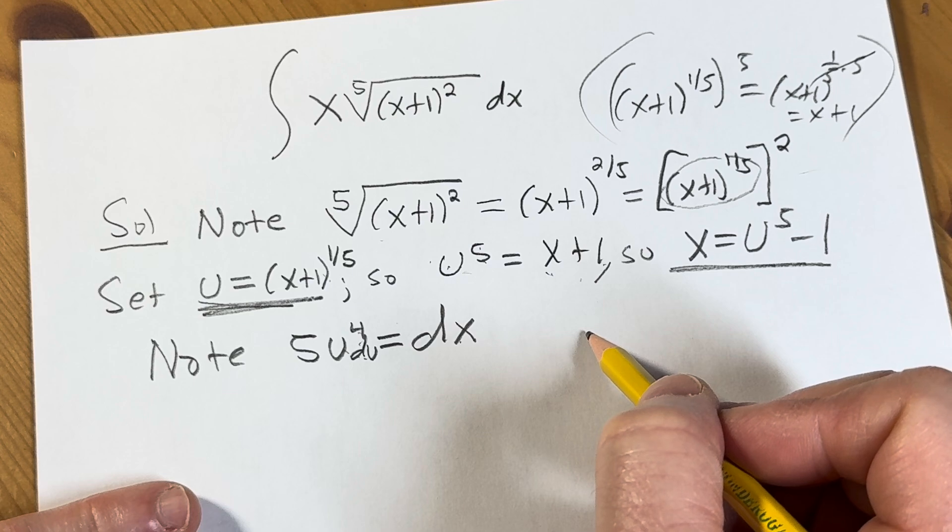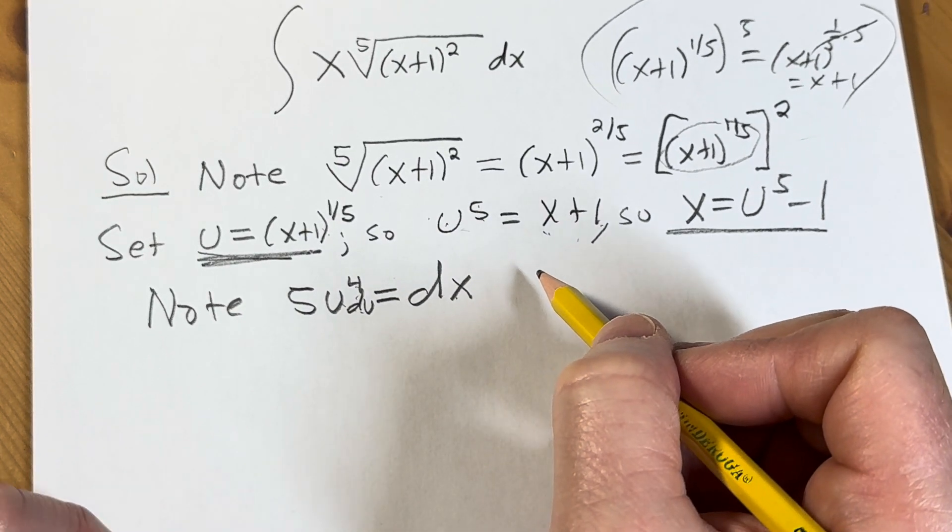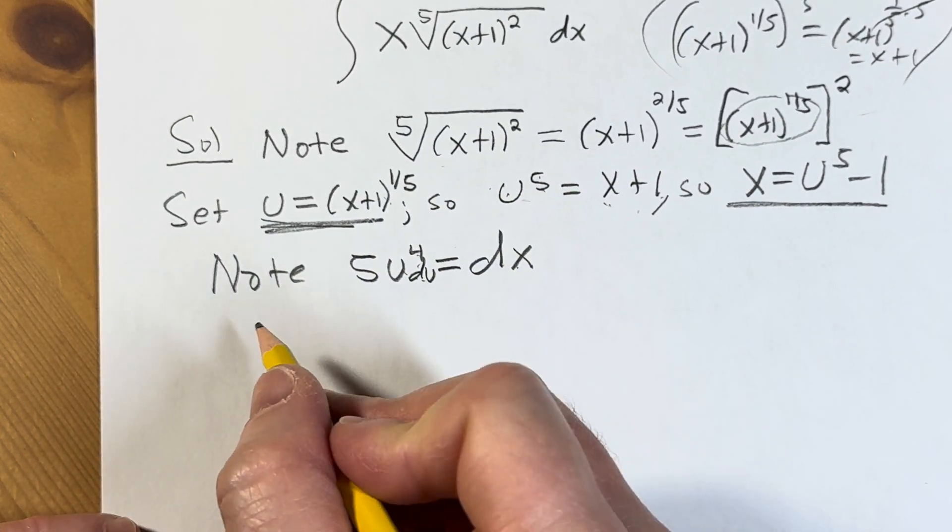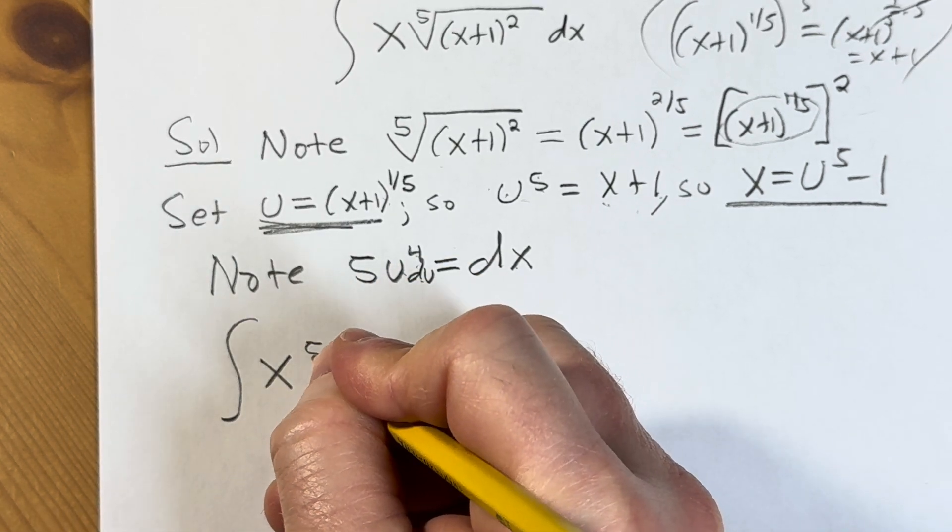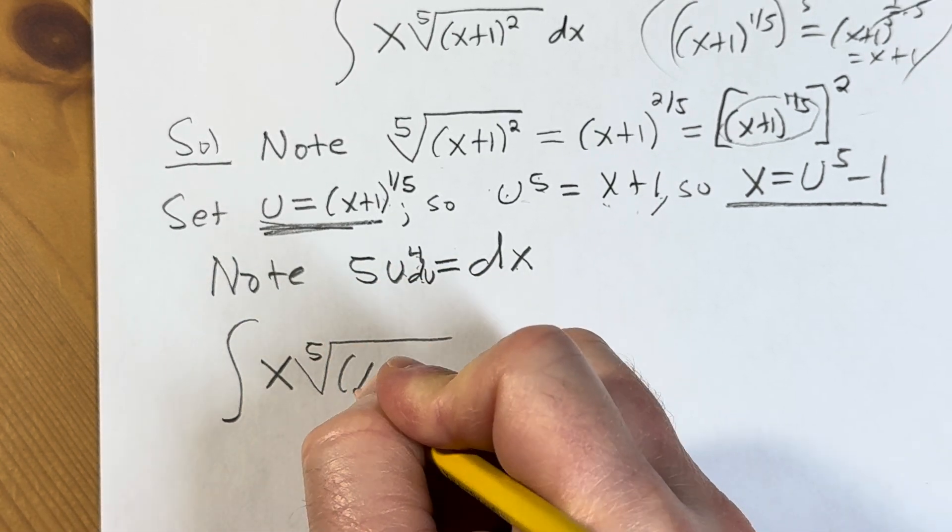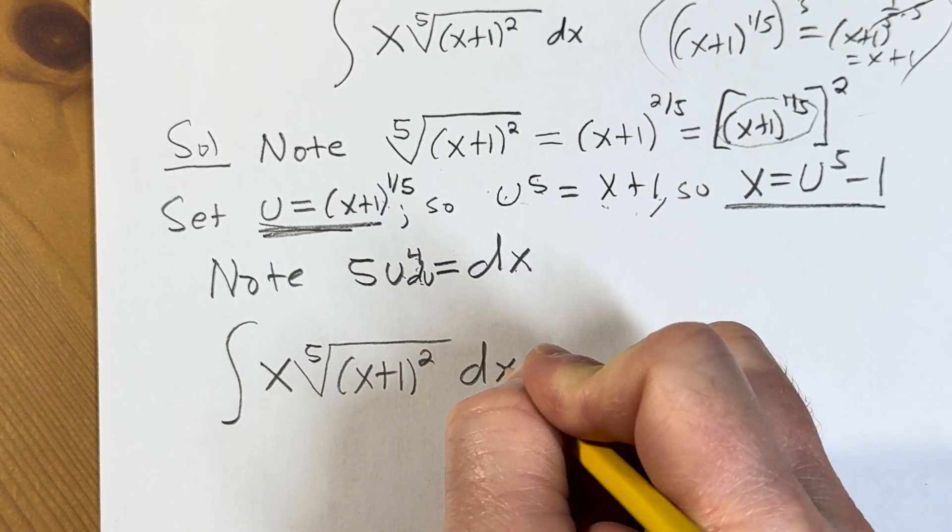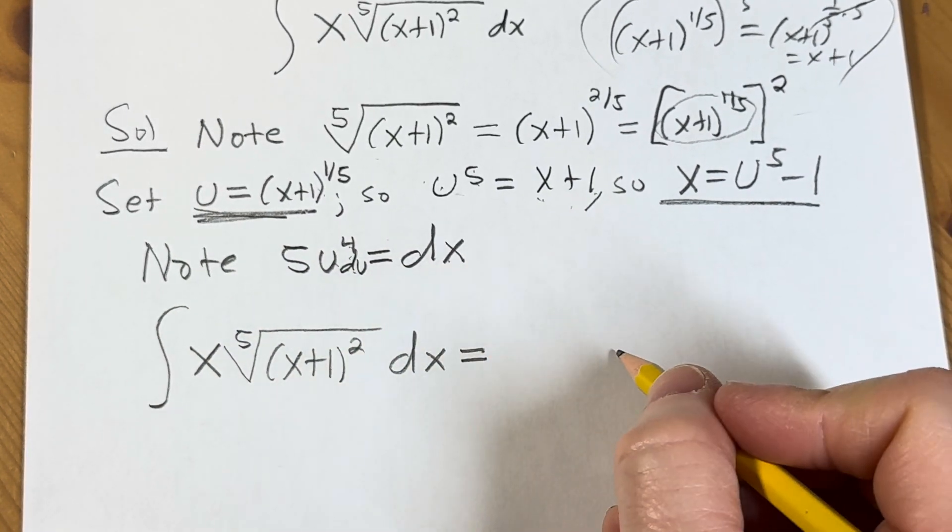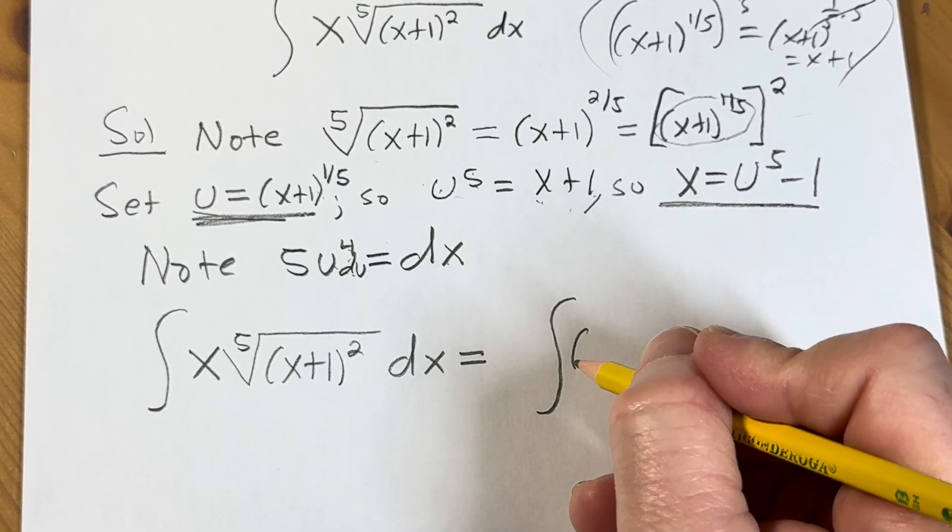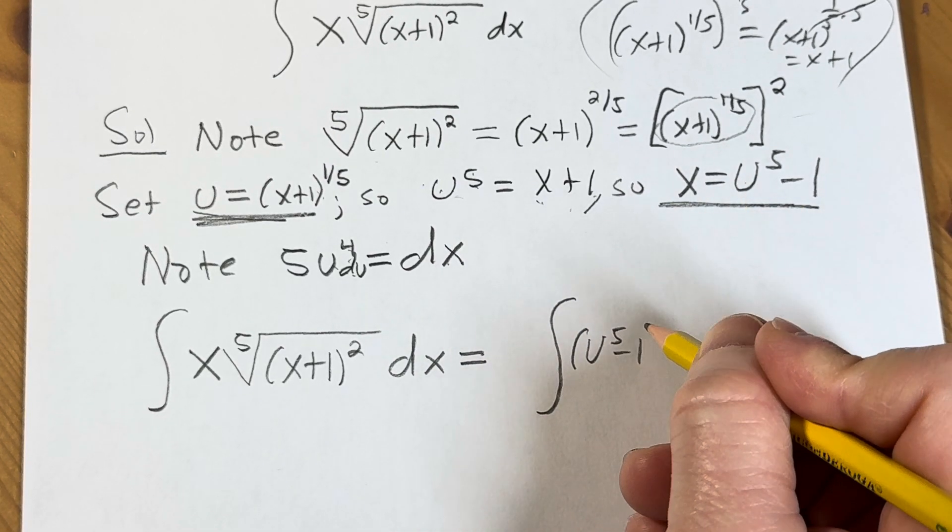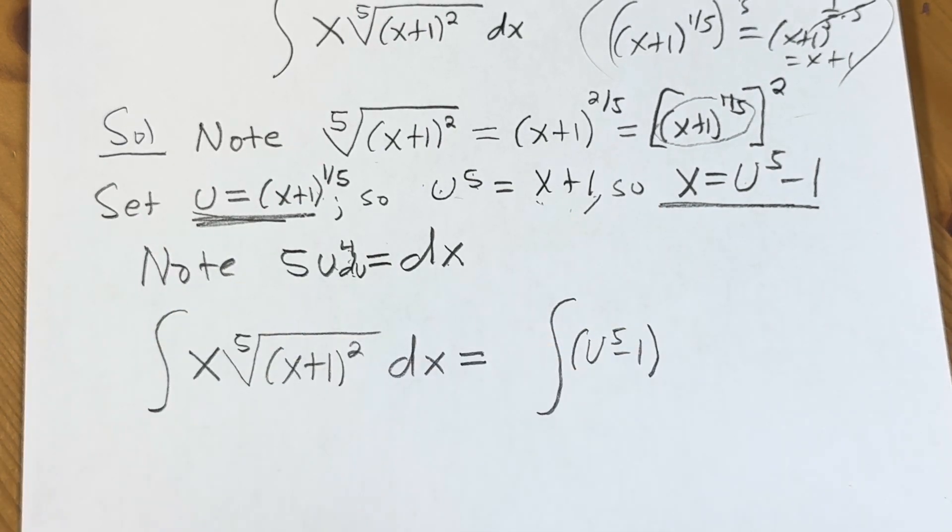So now we're ready to make the substitution. So I'm going to write down the original integral. You have the indefinite integral of x times the 5th root of the quantity x plus 1 squared dx. This is equal to, so I'm going to leave some space here. So x is u to the 5th minus 1. We know that. We also know that this piece here is equal to this.